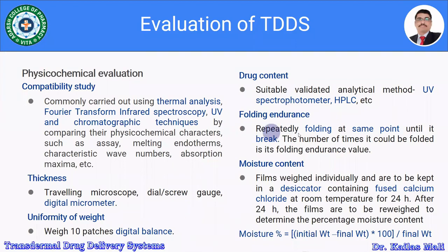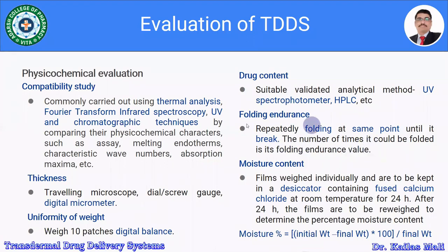In the folding endurance test, the patch is repeatedly folded at the same point until it breaks. The number of times it can be folded is its folding endurance value. Generally it should be more than 150, and this gives an idea about the mechanical properties of the transdermal patch.